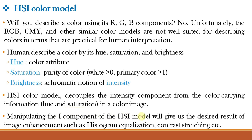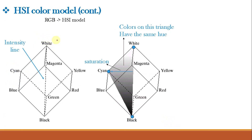By manipulating the intensity (I) component of the HSI model we can achieve desired image enhancements such as histogram equalization and contrast stretching. This figure shows the conceptual relationship between the RGB and HSI color models. The RGB cube is oriented so that the white-to-black intensity line is at the center. For a given color point in a shaded triangle, we pass a plane perpendicular to the intensity line containing that point — for example, with cyan as the color point.